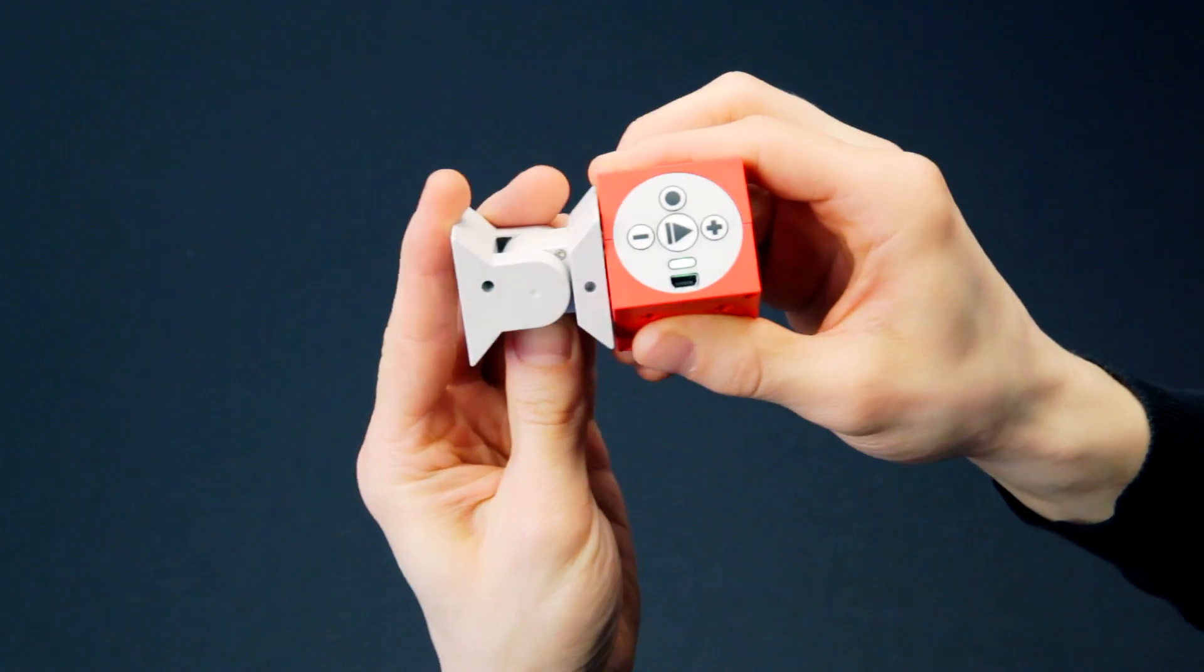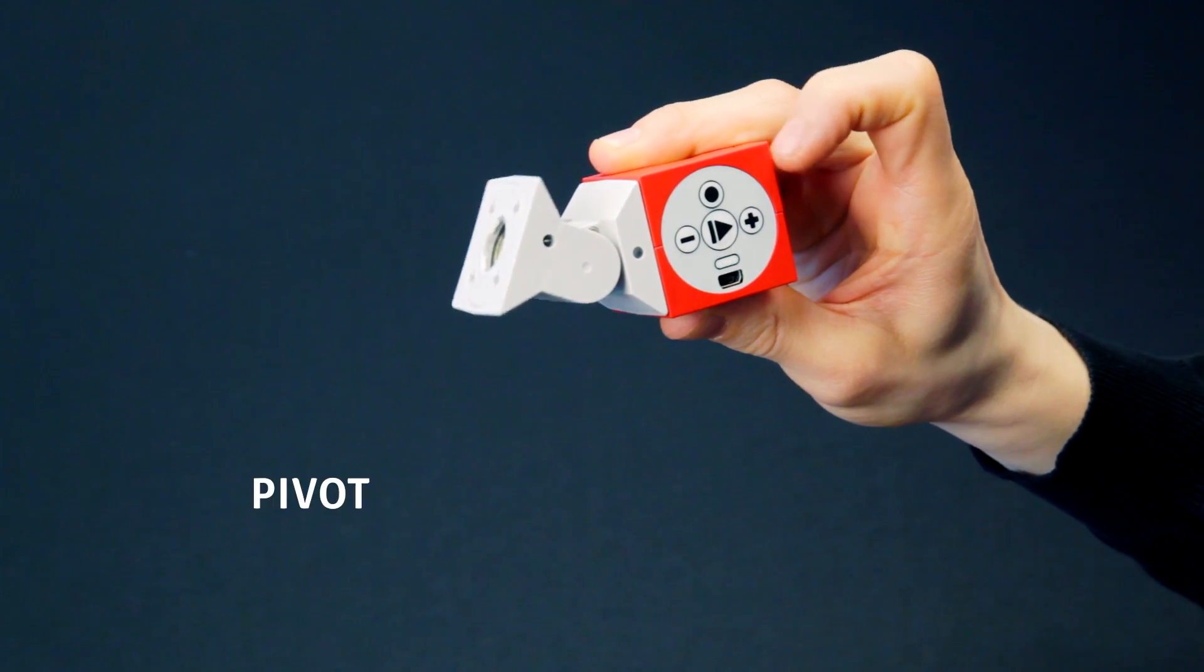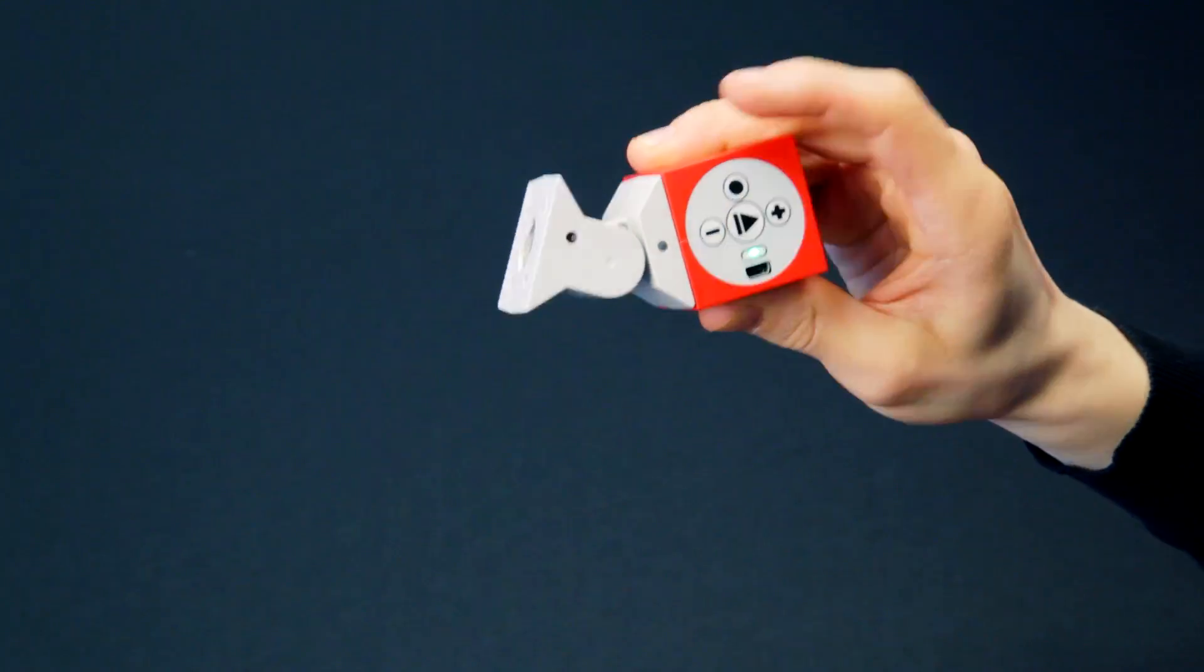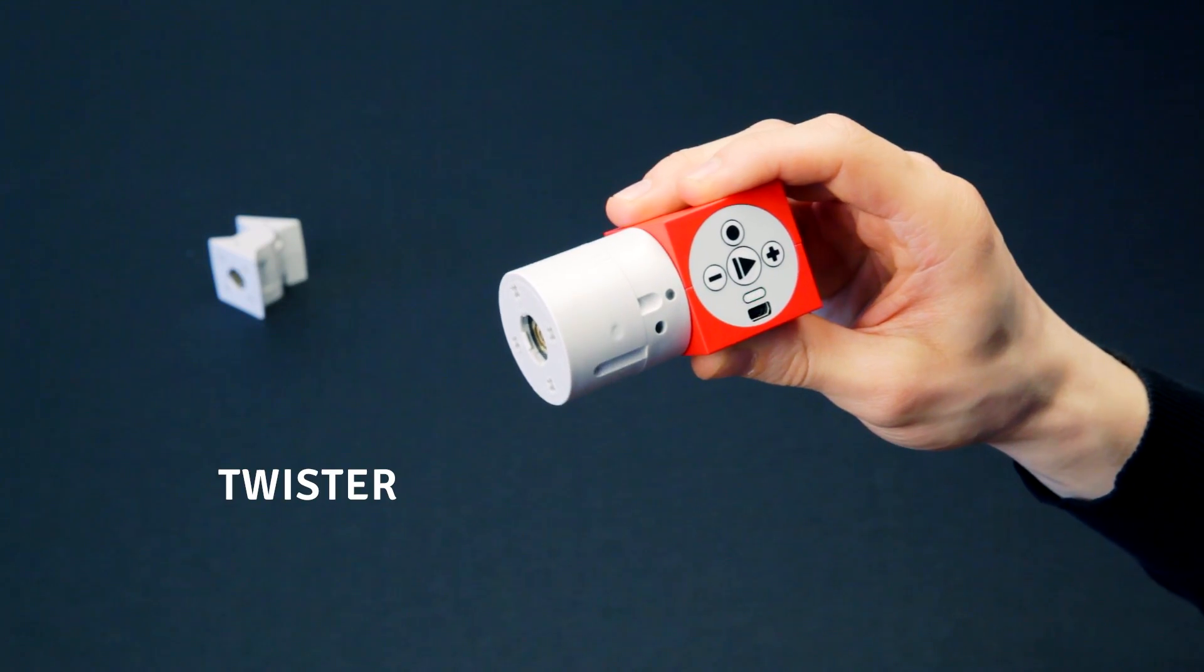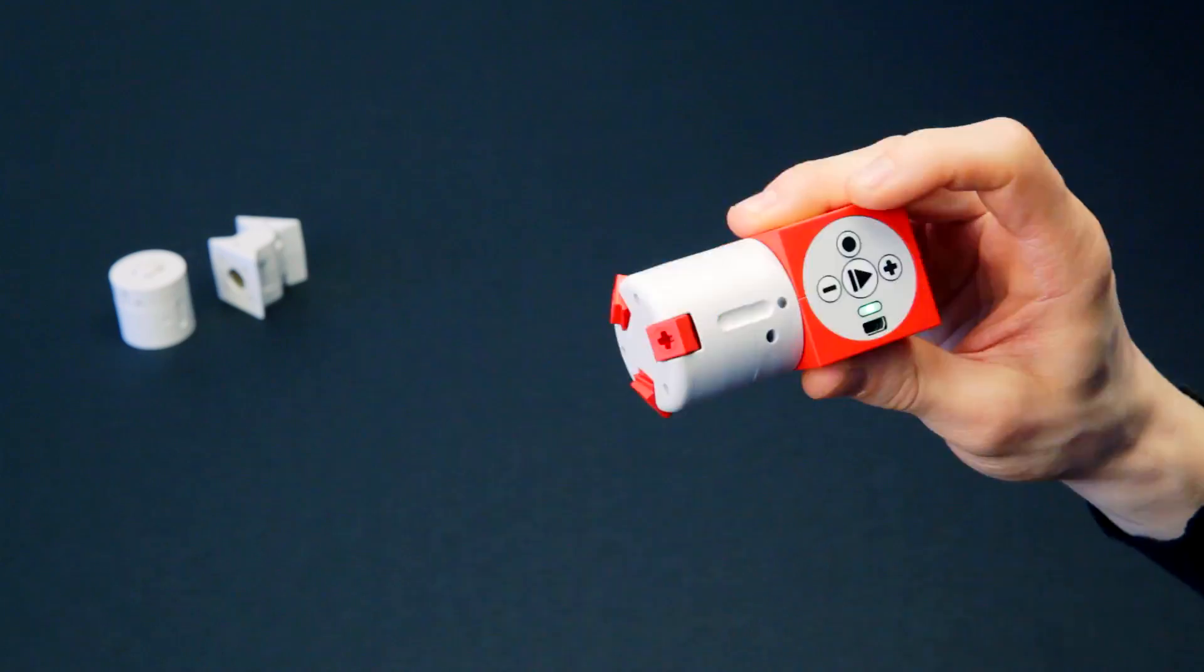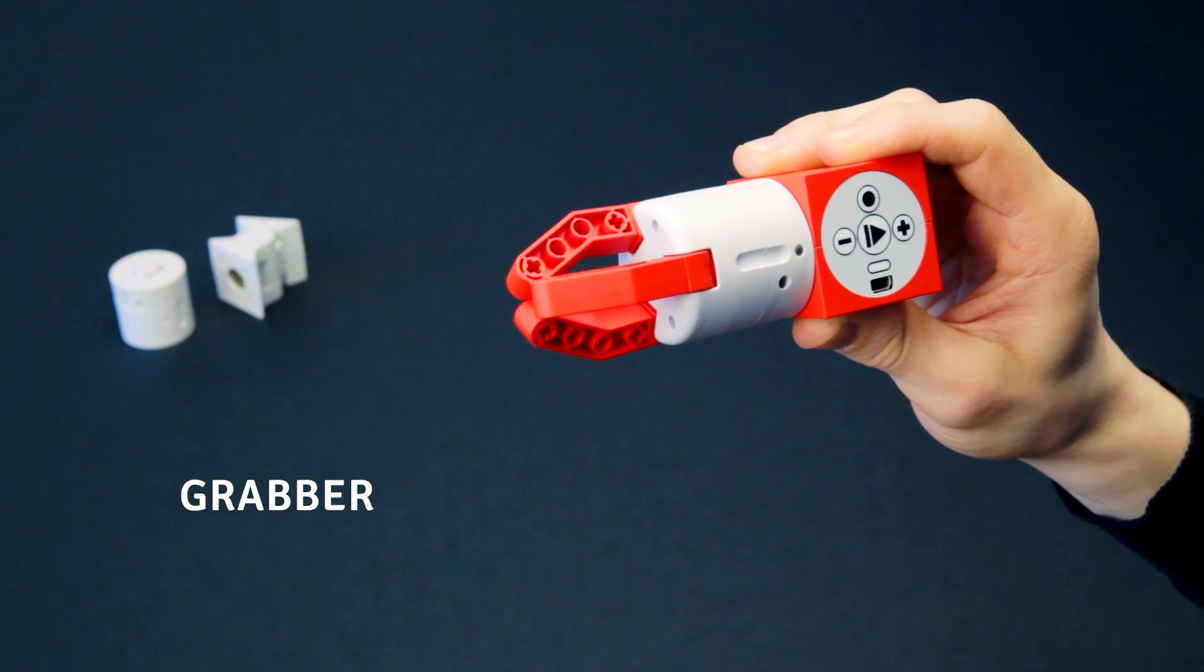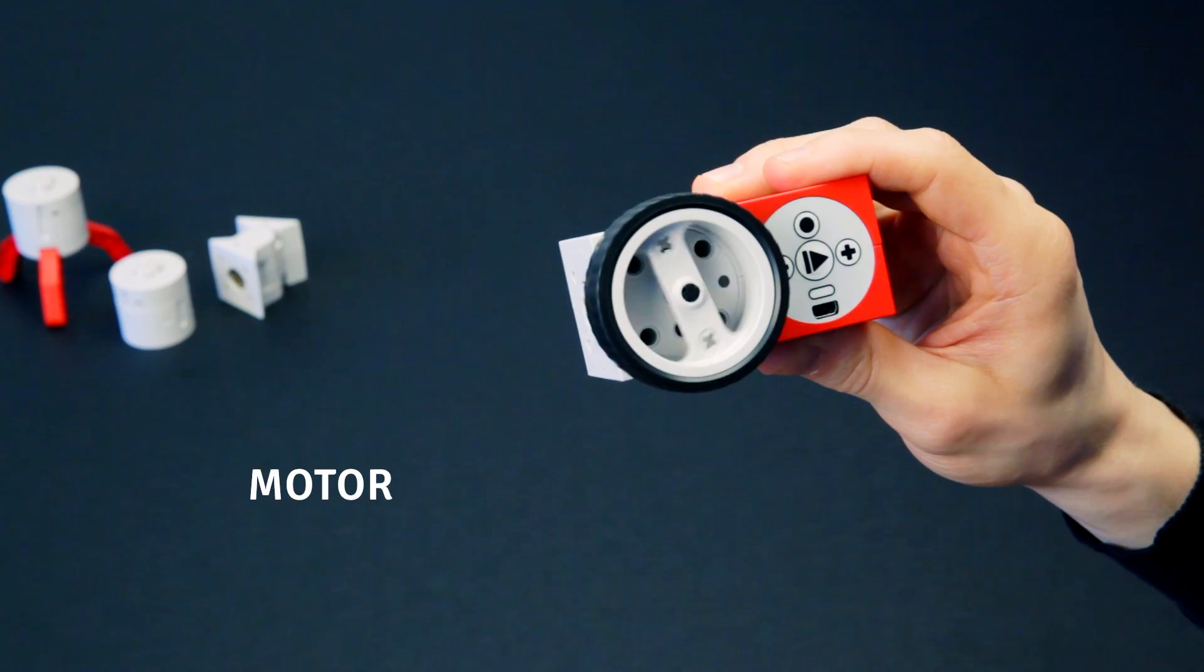It comes with a whole range of different motion modules, like the pivot, the twister, the grabber, and the motor module.